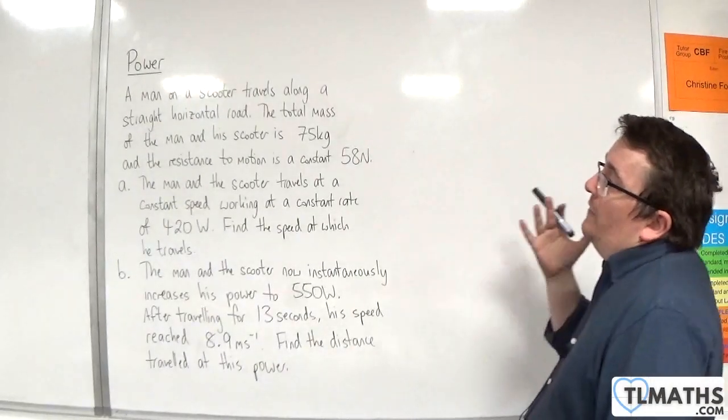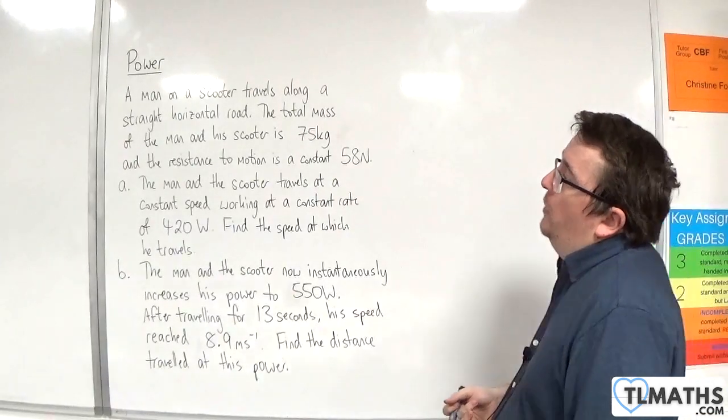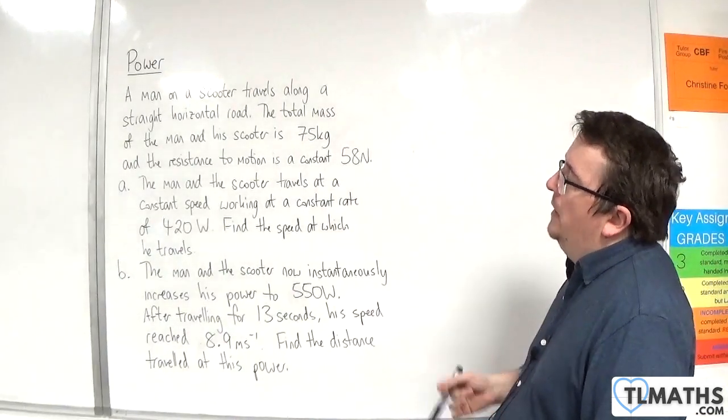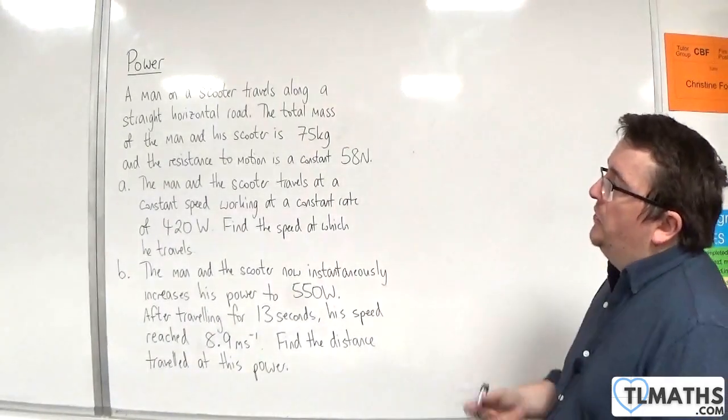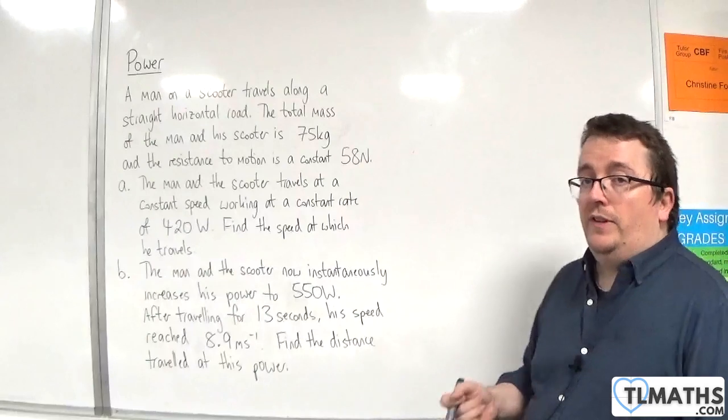In this problem, we have a man on a scooter travels along a straight horizontal road. The total mass of the man on his scooter is 75 kilos, and the resistance to motion is a constant 58 newtons.